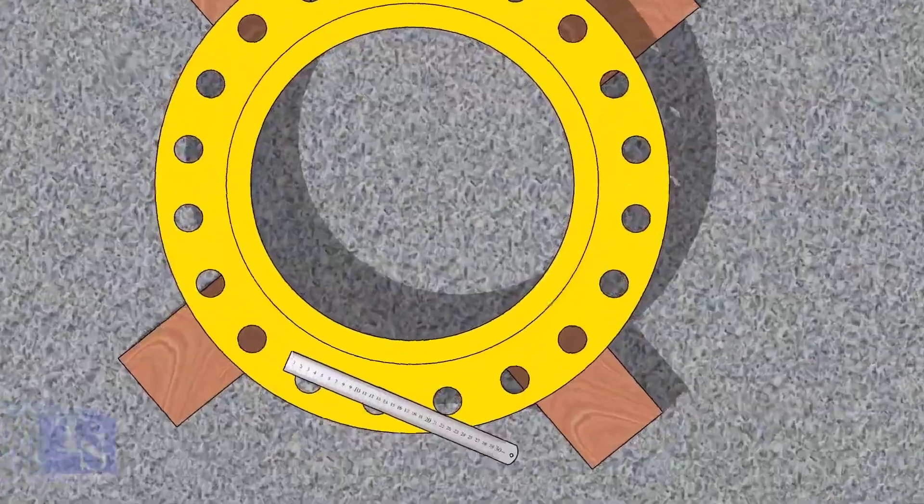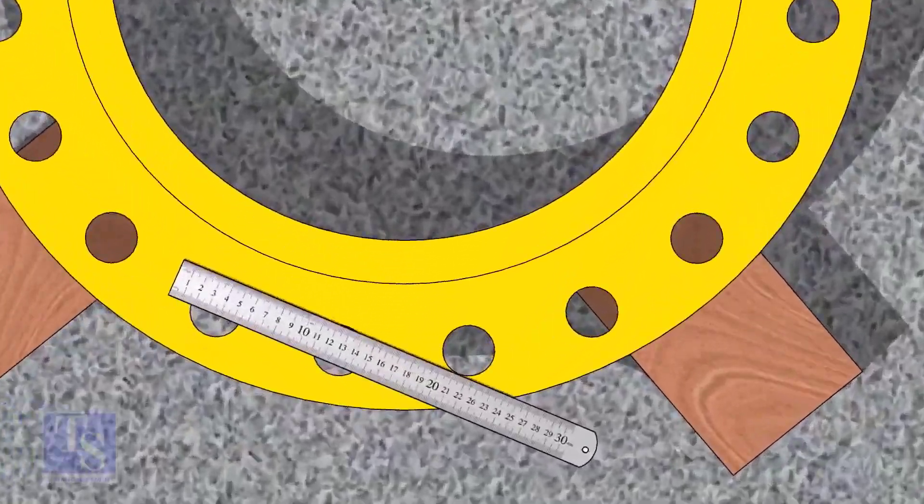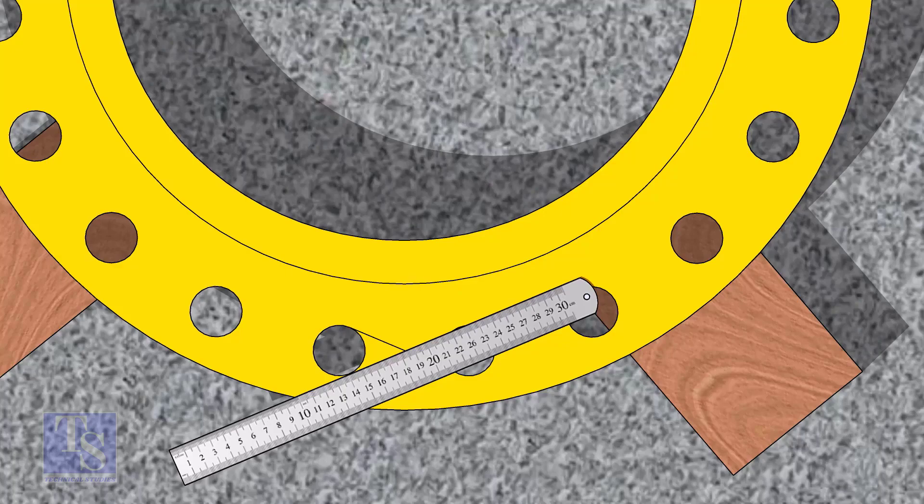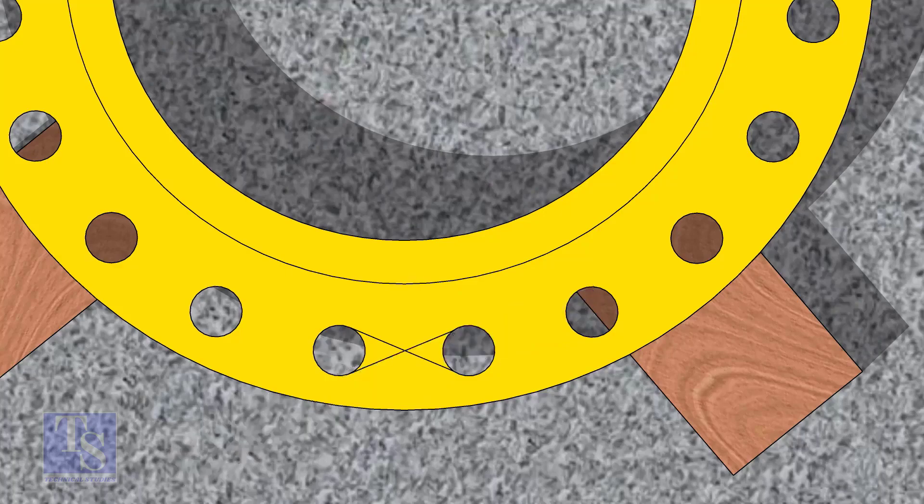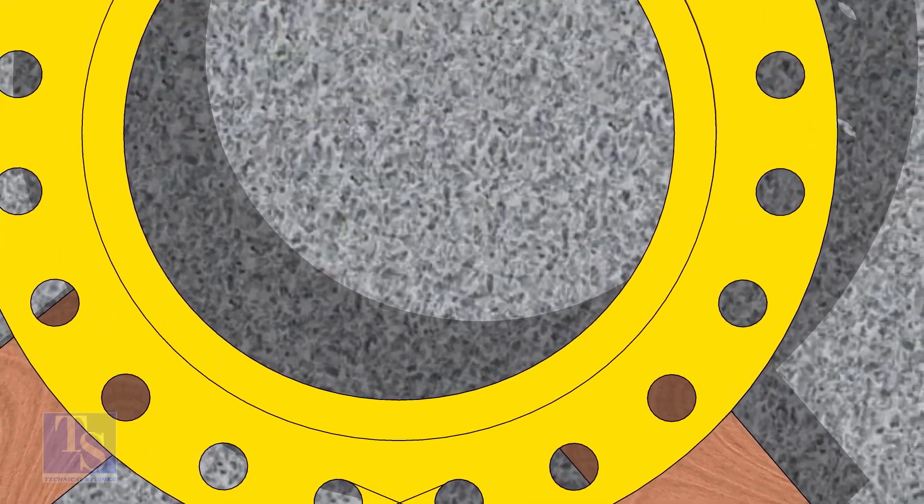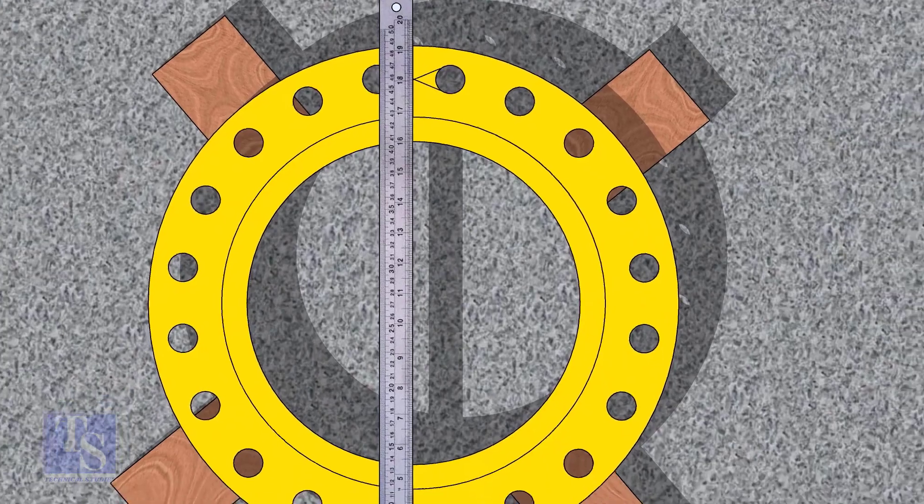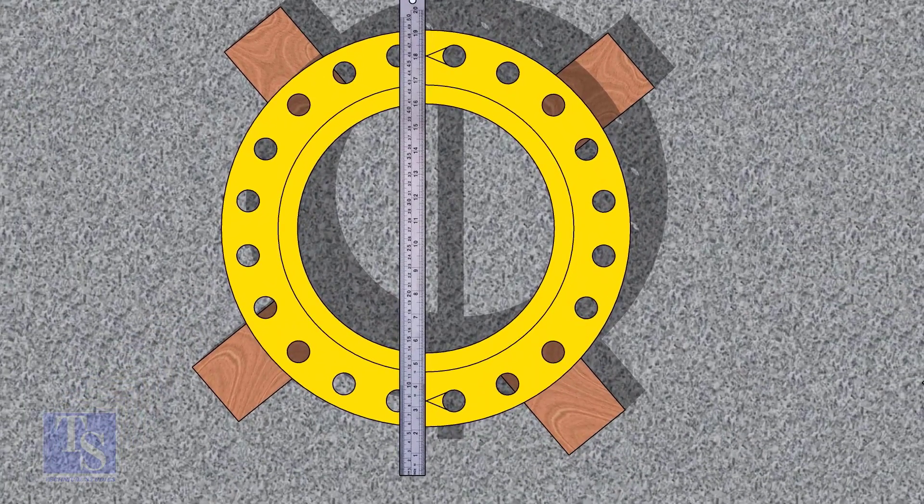Let us mark the center line of the flange. Draw tangential lines of two adjacent holes. The intersection of the lines is the center of these holes. Draw the center of the two holes on the opposite side. Draw the center line of the flange as shown.